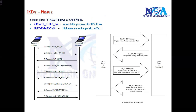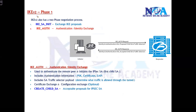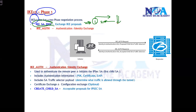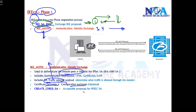In the IKEv2 process, Phase 1 exchanges proposals in the first and second messages — the first message sent by the initiator and the second by the responder — where they exchange security SA proposal information, such as what algorithms will be used. Then it moves to the third and fourth messages, where they authenticate the peer and carry additional information like what traffic should be secured, traffic selectors, certificate information, configuration information, and proposals for IPsec — which is what we call the Child SA.